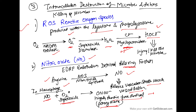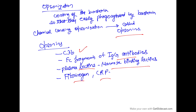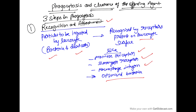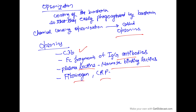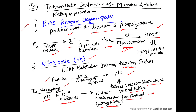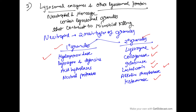So we have discussed phagocytosis, which includes three processes: one, recognition and attachment; two, engulfment; and three, intracellular killing of the microbes and debris. This is all about phagocytosis. Thank you. Next class we will continue with mediators of inflammation.